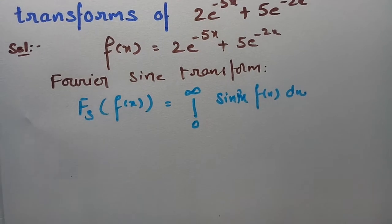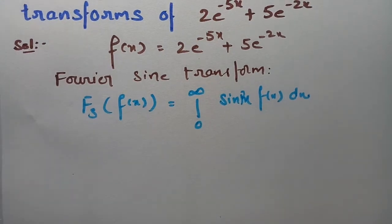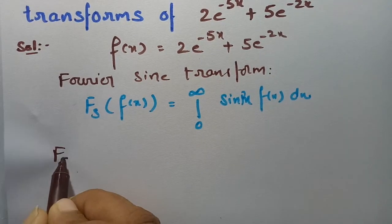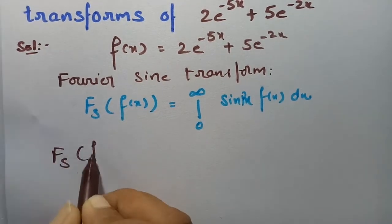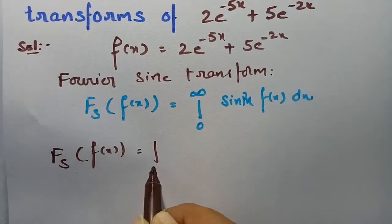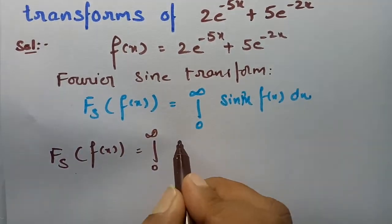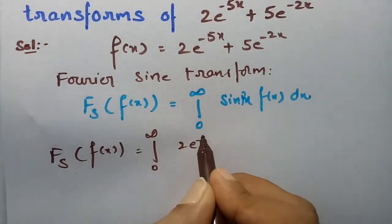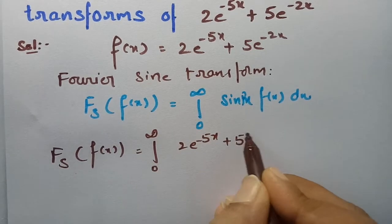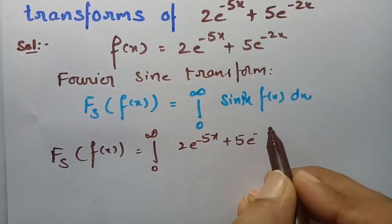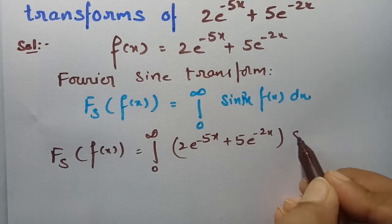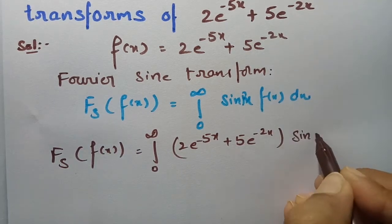So what is our f of x function? I am going to substitute this. The Fourier sine transform of f of x is equal to integral 0 to infinity of 2 into e power minus 5x plus 5 into e power minus 2x into sin px into dx.